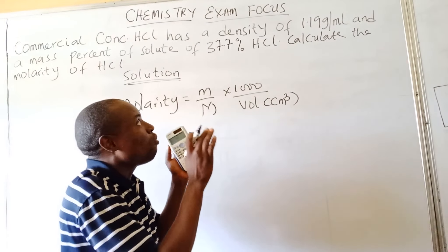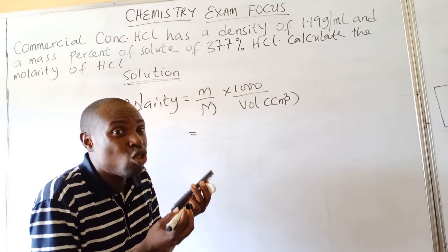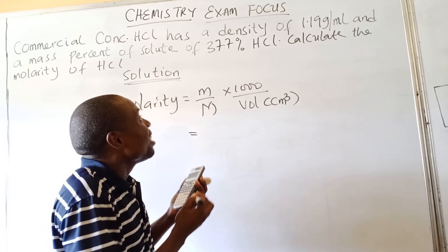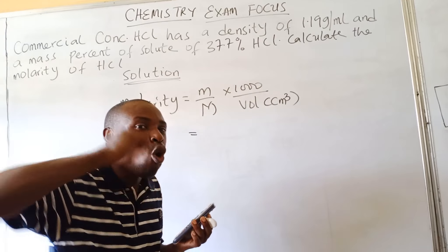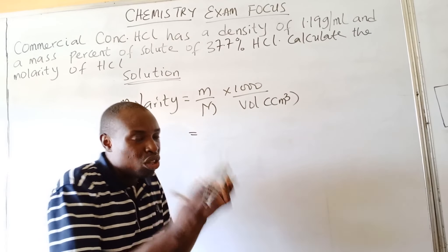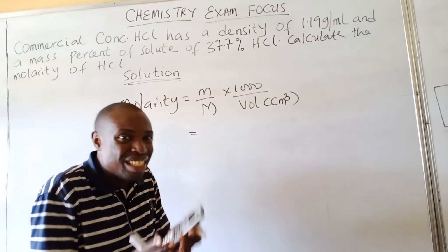the mass of the solution will be 100 grams. Combining the water plus the HCl together gives us the solution. So it means that the mass here is 37.7 over the molar mass of HCl